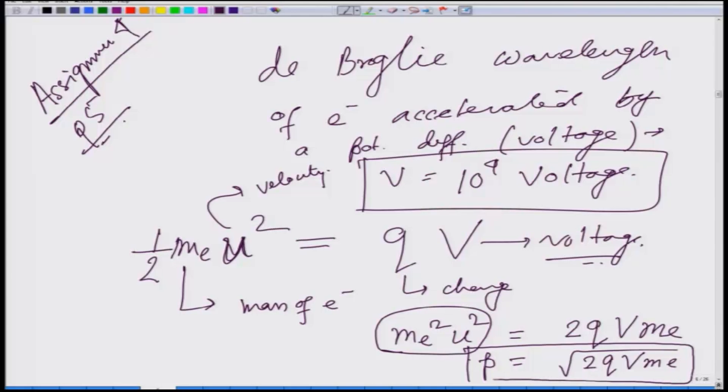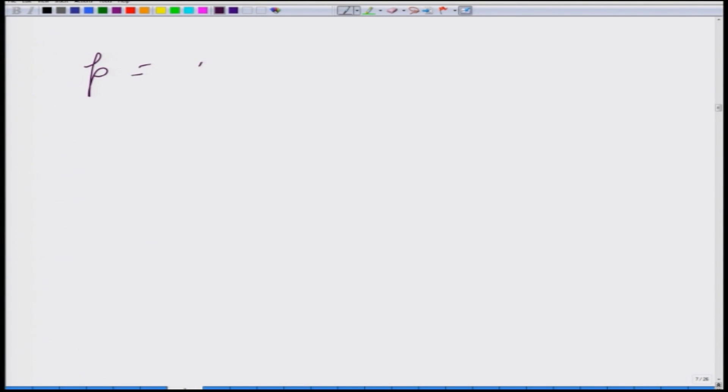We will use this equation to find out the momentum and then from the momentum we will find out the de Broglie wavelength. So p we found out as square root of 2 q v m e.